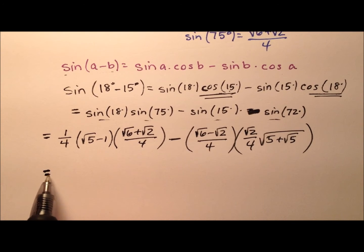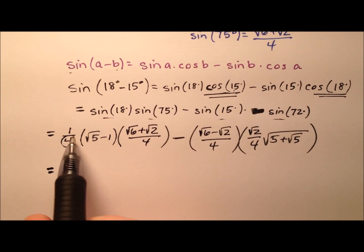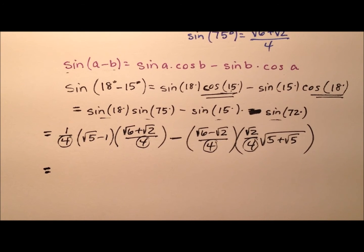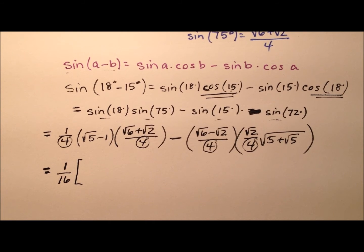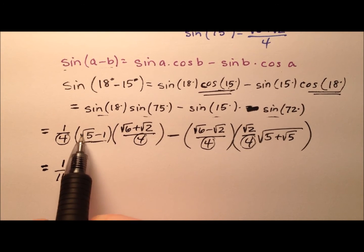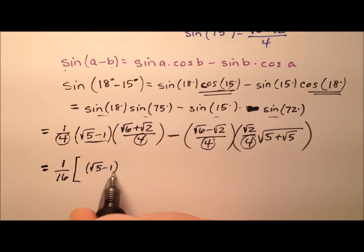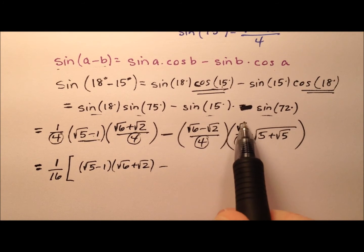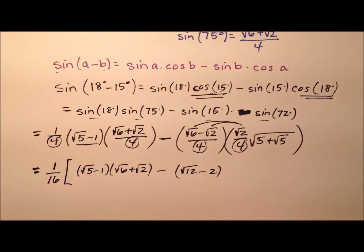So here we have the exact value for the sine of 3 degrees — let's go ahead and clean this up a little bit. I notice immediately that 4 times 4 is 16 in the denominator for both terms, so I can factor that 1/16 out right at the beginning to make things easier. So I have this (√5 minus 1) times (√6 plus √2) in parentheses, and then minus — this square root of 2, I can back-distribute through — so it'll end up being the square root of 12 minus 2, times that square root expression.